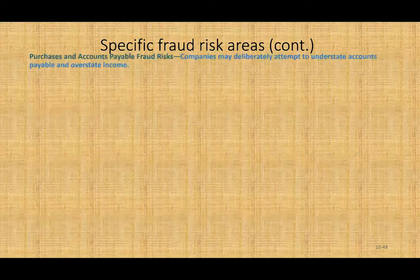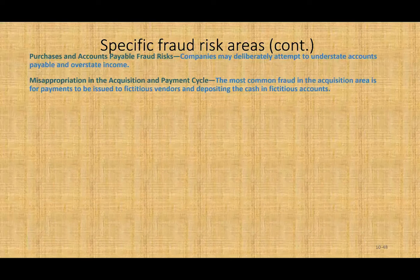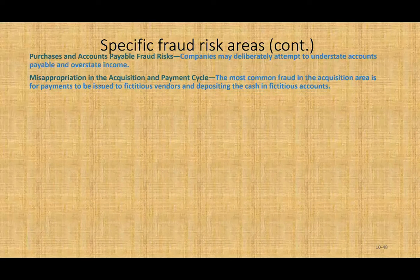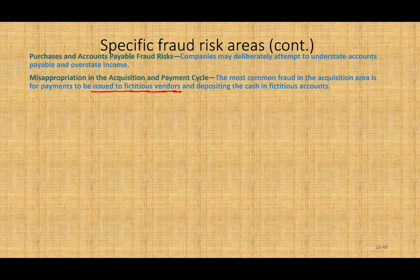Other specific fraud risk areas include purchasing and accounts payable fraud. Companies may deliberately understate accounts payable and overstate income. As we saw in the Regina Vacuum case, the president was hiding all the unpaid bills because they didn't want to record the expense. The most common fraud in the acquisition area is payment issued to fictitious vendors or inflated payments to real vendors. The purchasing agent pays vendors more and receives kickbacks, or creates fictitious vendors — paying spouses, relatives — and deposits cash in a fictitious account.